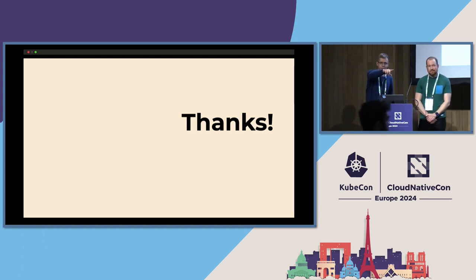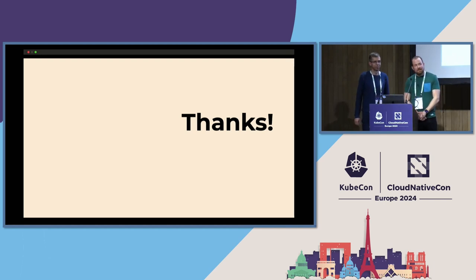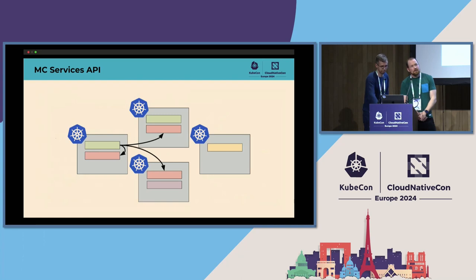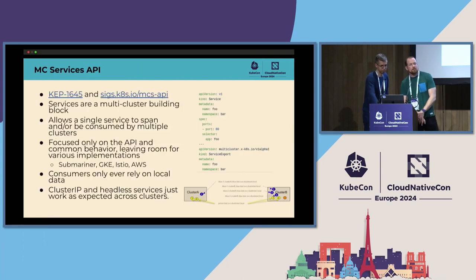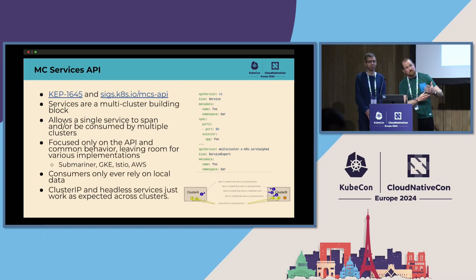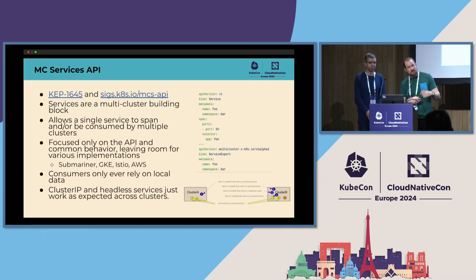Q&A: Thank you for the talk. You mentioned that consumers only ever rely on local data — can you describe what you mean? So, are you saying that at cluster A, I don't need to know the endpoints of cluster B? You do need to know the endpoints, but the way we've designed this is under the assumption that those endpoints will be imported by the implementation into the consuming cluster. So when you actually talk to those endpoints, that list is local — you're not trying to do an on-demand fan-out.